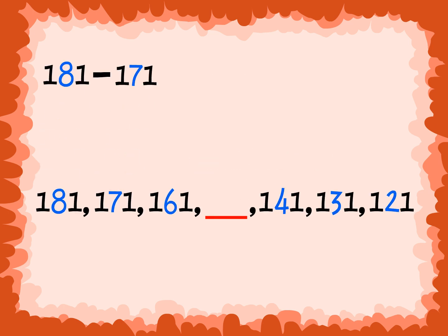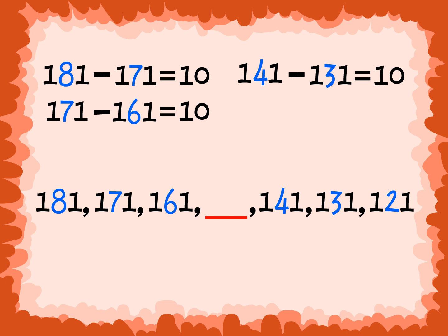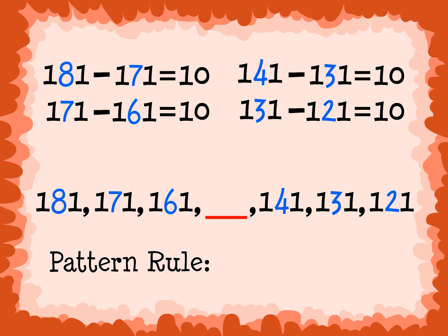Step 2: 181 minus 171 equals 10, 171 minus 161 equals 10, 141 minus 131 equals 10, and 131 minus 121 equals 10. I see that the tens column decreases by 1, or that the numbers decrease by 10. The pattern rule is decrease by 10. I can count back my tens to figure out the missing parts of the pattern.